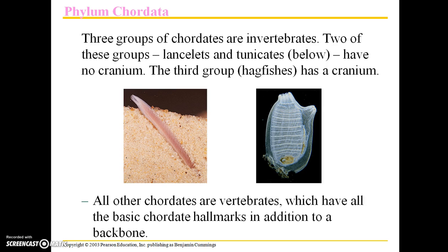There are three groups of chordates that are actually invertebrates. Two of these groups — lancelets and tunicates — have no cranium, and the third has a cranium. All other chordates are vertebrates, which have all the basic chordate hallmarks in addition to a backbone.